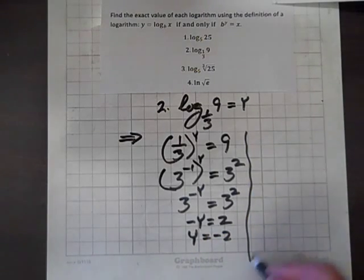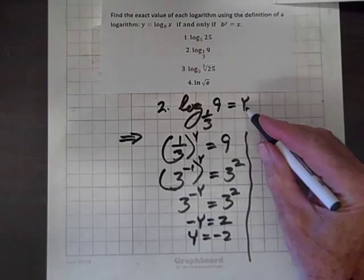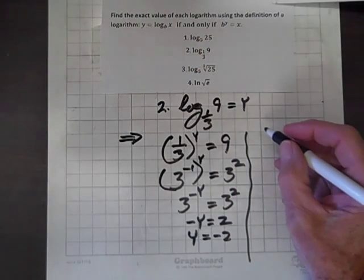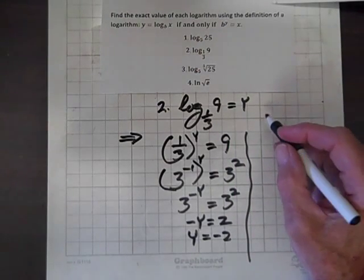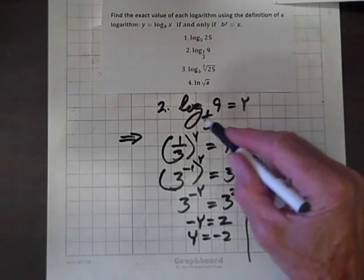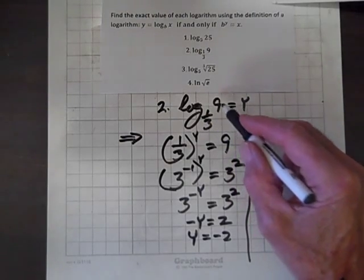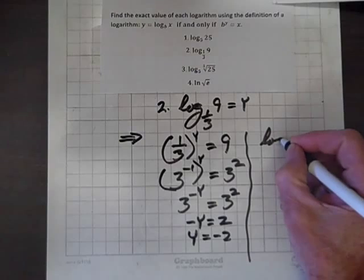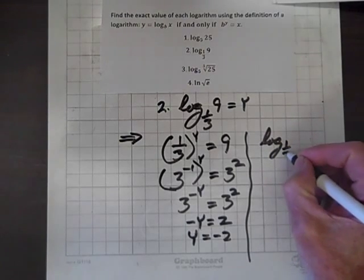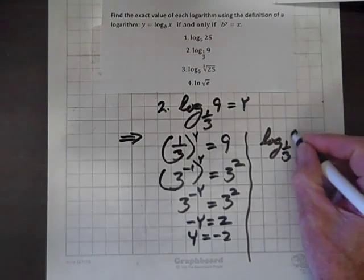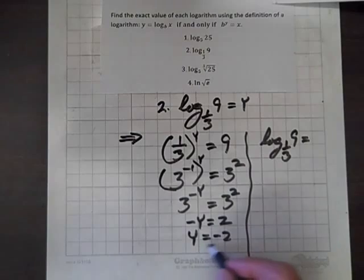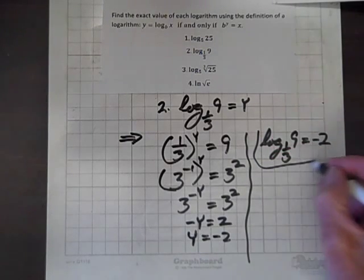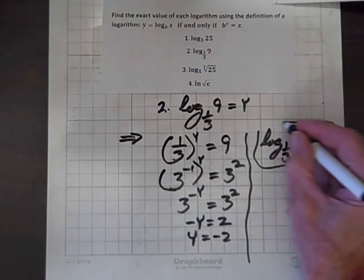Consequently, since y equals log to the base 1/3 of 9, then log to the base 1/3 of 9 must equal negative 2. And we've simplified another one.